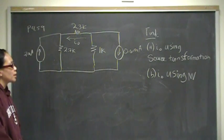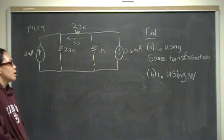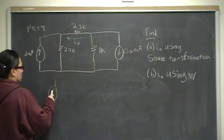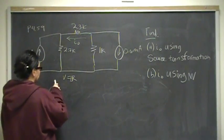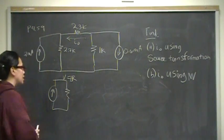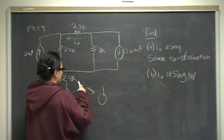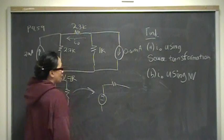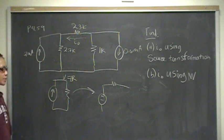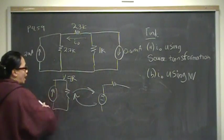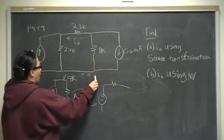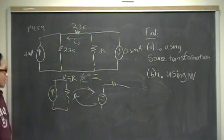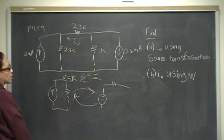So for part A, what you want to do is you need to know what is a source transformation. A source transformation is basically redrawing the circuit with its equivalence. We use Ohm's law, V equals IR, which says that when you have a current in parallel with a resistor, that is the same thing as using voltage equals current times resistance. That's equivalent to a voltage source in series with a resistor.